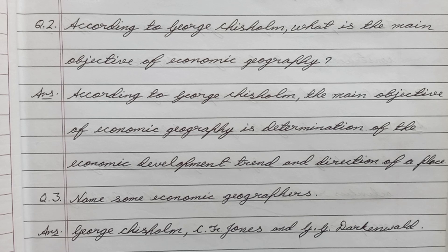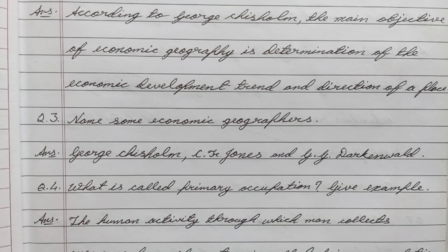Question number two: According to George Chisholm, what is the main objective of economic geography? Answer: According to George Chisholm, the main objective of economic geography is determination of the economic development trend and direction of a place.